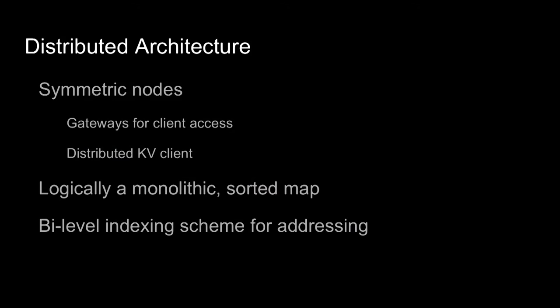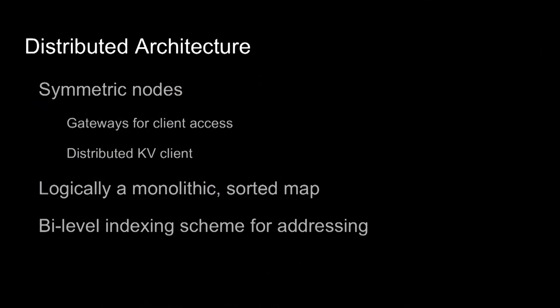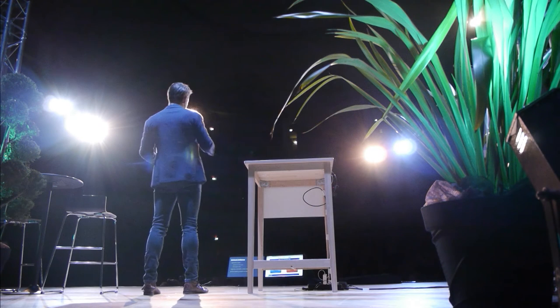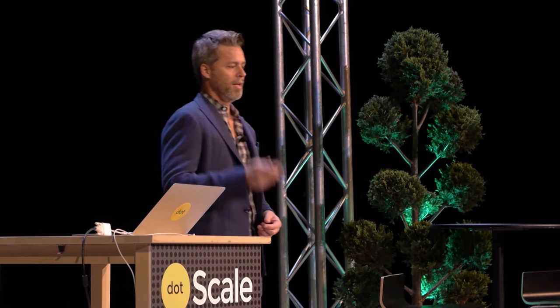In order to understand the distributed transaction model, we need to cover a little bit about the distributed architecture. Cockroach has a single binary and every node is symmetric, so they all take on the same roles — each one is a gateway for clients to access the system, and each one has a distributed KV client which it uses to talk to other nodes. Logically, Cockroach implements just one big monolithic sorted map, similar to how Bigtable and Spanner work, in contrast to something like Cassandra which uses consistent hashing. There's a bi-level indexing scheme required for addressing this big sorted map.